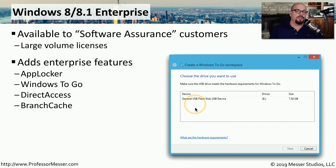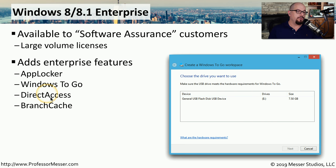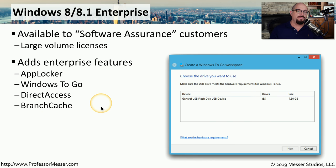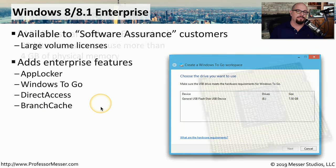The Enterprise version is fully featured, so you can use AppLocker, Windows To Go, Direct Access, BranchCache, and all of the other features available in Windows.